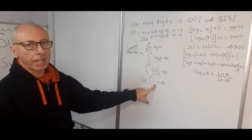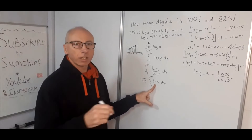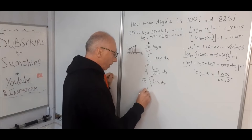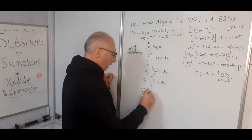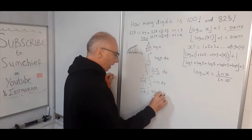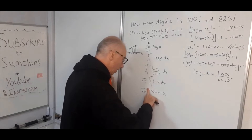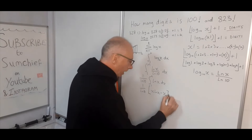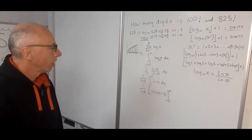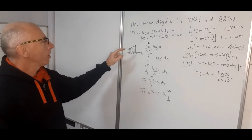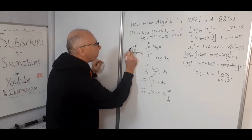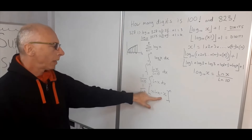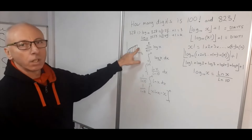We know how to integrate ln(x) — using integration by parts, the result is x·ln(x) - x. So our integral becomes (1/ln(10)) × [x·ln(x) - x] evaluated from 1 to n. This gives us a good approximation, but there are small areas not accounted for by the integral, so we need to add some kind of error term to make up the difference.